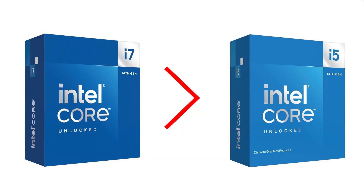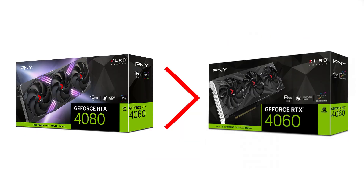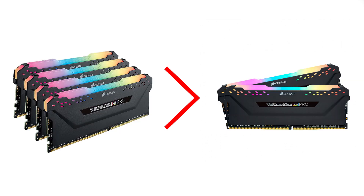For example, an Intel Core i7 is better than an i5, an RTX 4080 is better than a 4060, and 32GB of RAM is obviously better than 16.